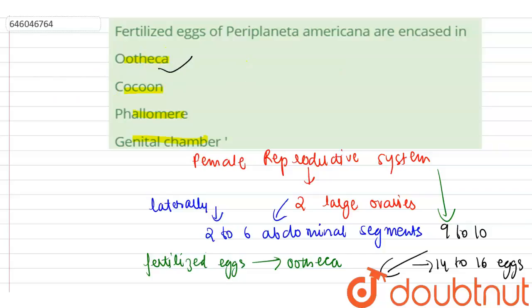Cocoon is the incorrect option because the fertilized eggs are not encased in cocoon. Fertilization takes place in cocoon in the case of earthworm.